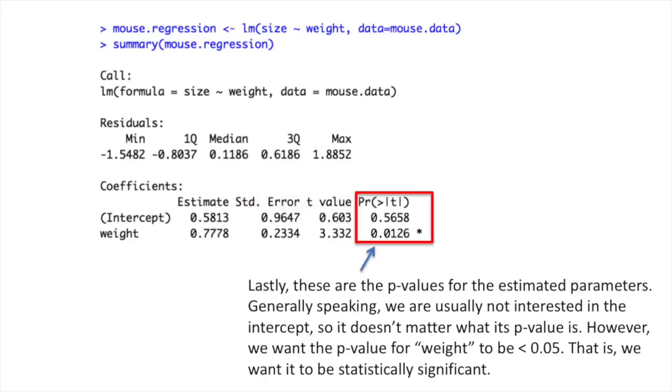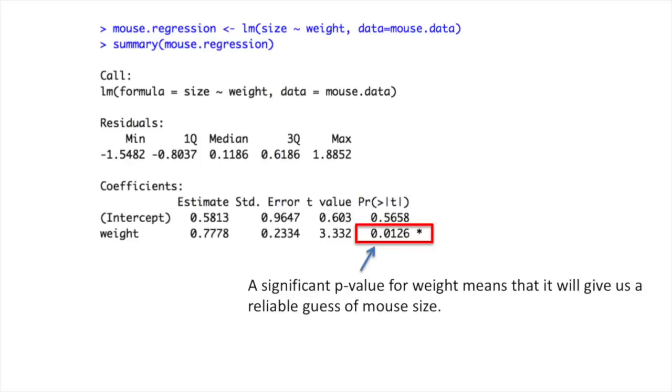Lastly, these are the p-values for the estimated parameters. Generally speaking, we are usually not interested in the intercept, so it doesn't matter what its p-value is. However, we want a p-value for weight to be less than 0.05. That is, we want it to be statistically significant. A significant p-value for weight means that it will give us a reliable guess of mouse size.